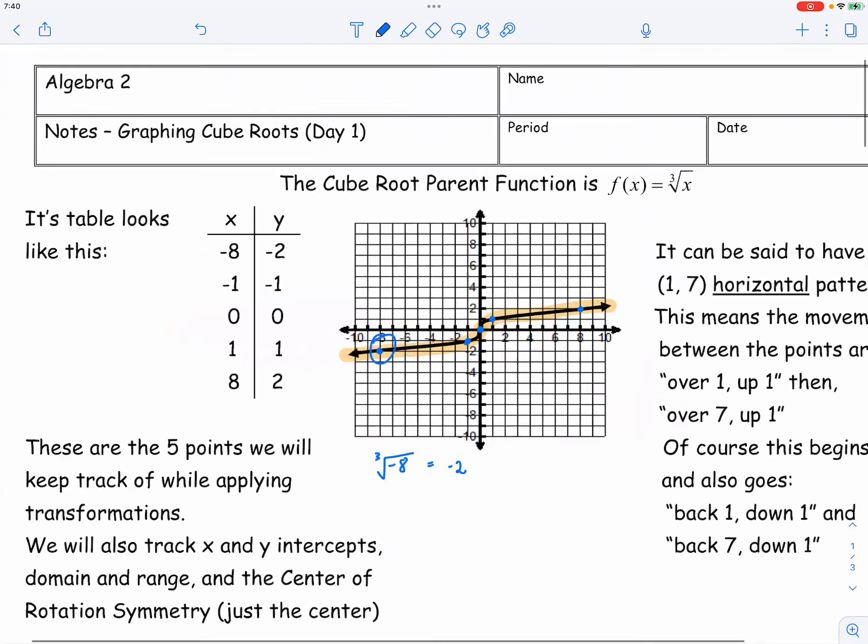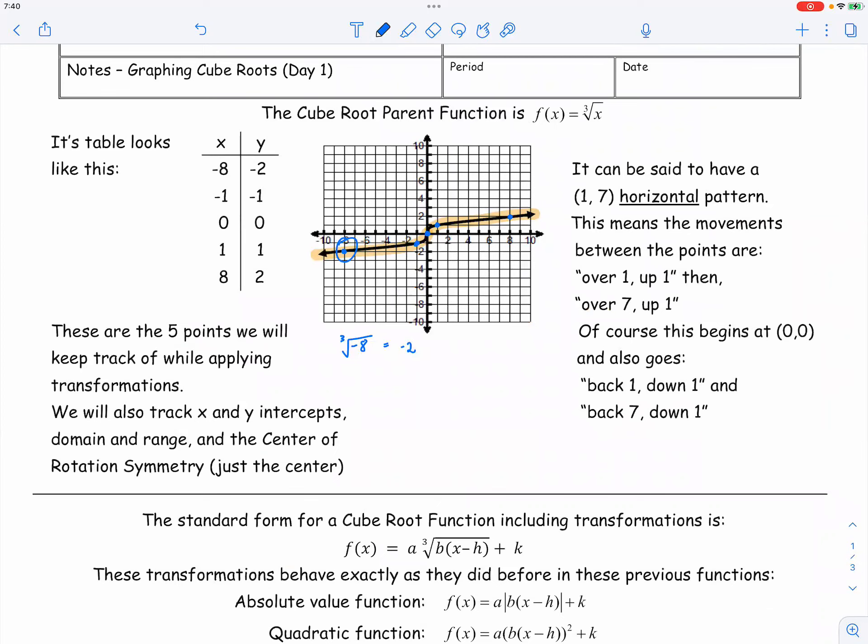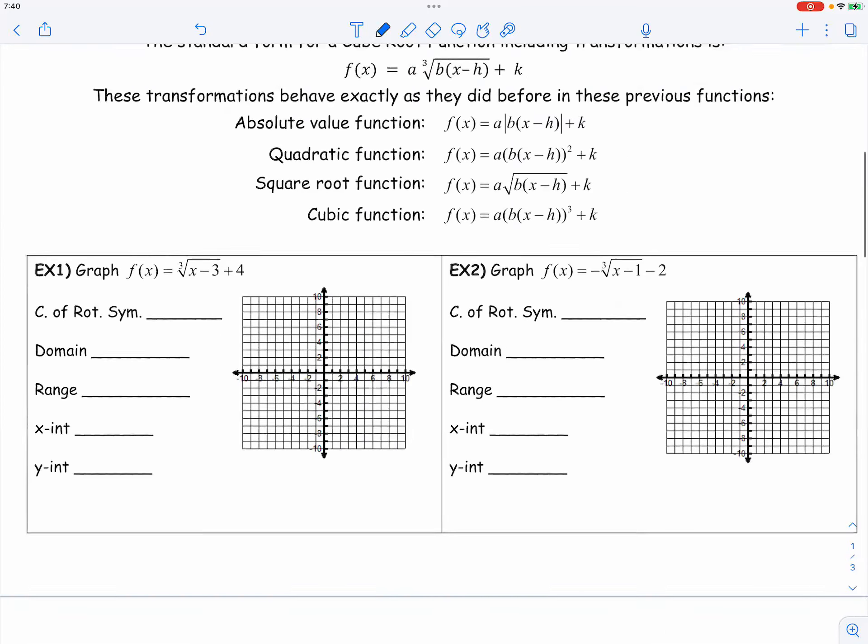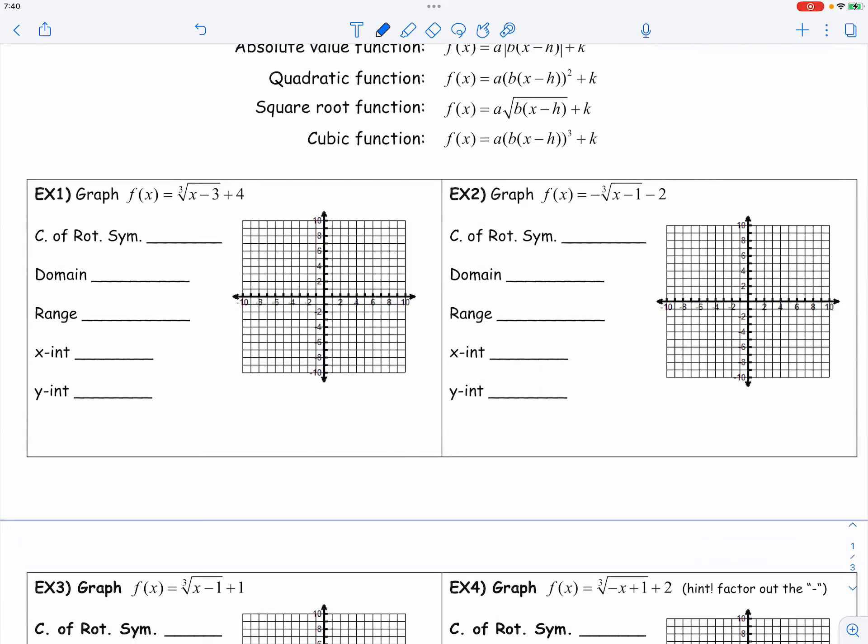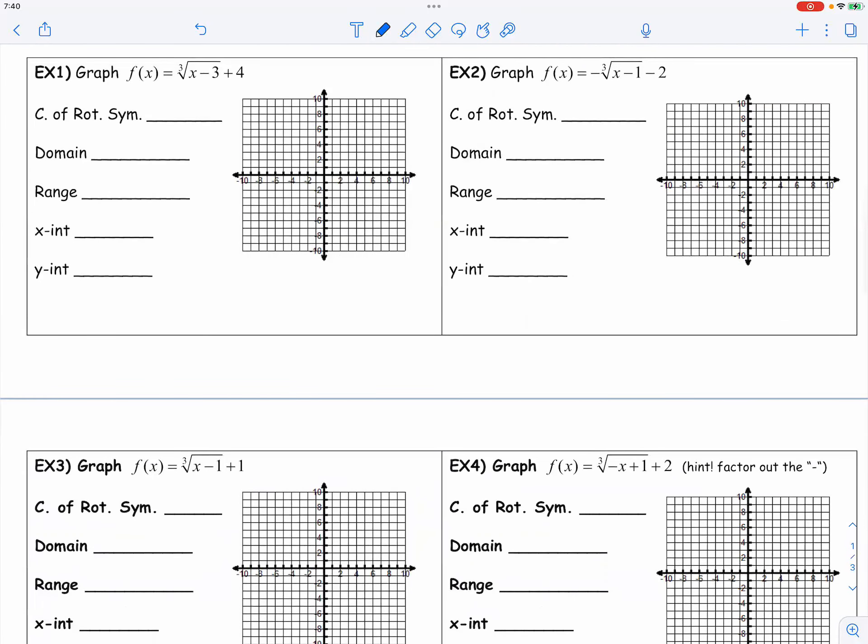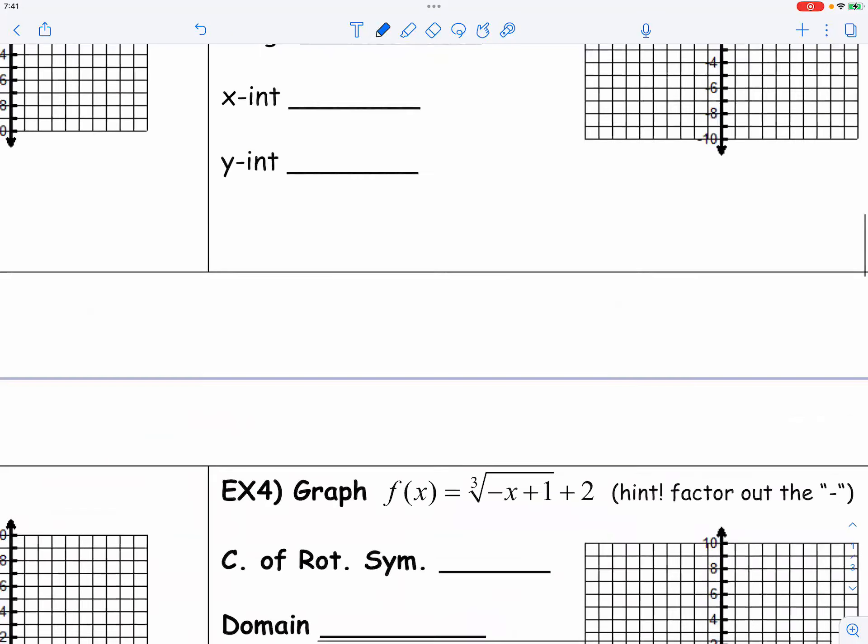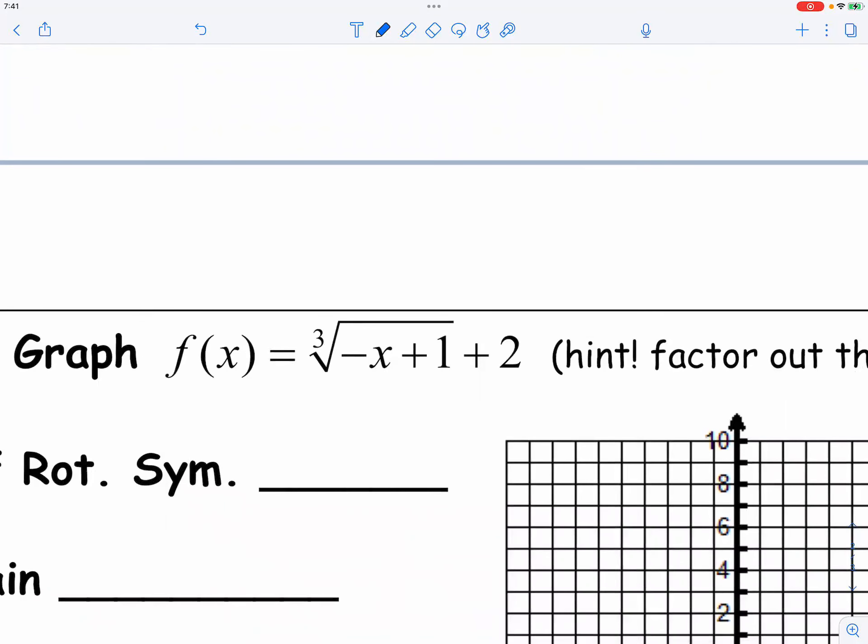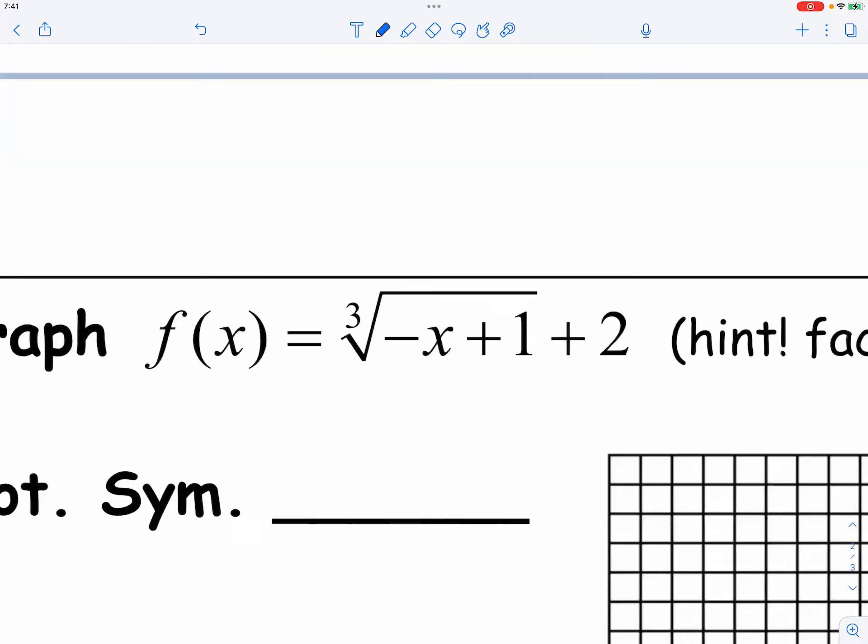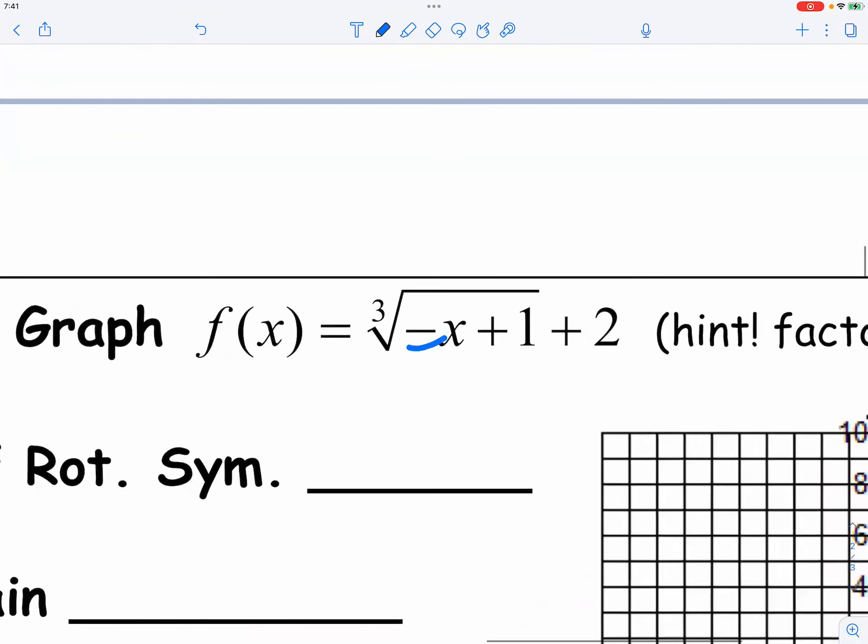For today, we are going to do a very simple task. We are just going to draw some graphs. If you take a quick glance at all the examples here, not too difficult. It's mostly just about shifting left and right, up and down. We have some reflection. And are you ready to factor the negative when there is a negative sitting in the front?